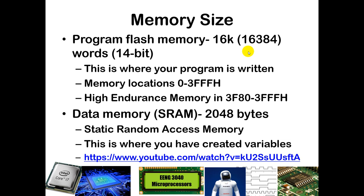The flash program memory is 16K — that is 16,384 words, each 14 bits wide — in memory locations 0 through 3FF. At the end of that memory we have what is known as high endurance memory, which is effectively the substitute for the EEPROM. This allows us to store non-volatile data, so if you cycle power and turn it back on you will be able to retrieve the same value. In class we will have an exercise where you learn to write and read that particular part of memory.